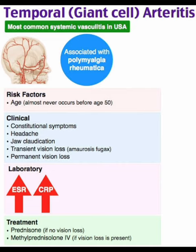Risk factors: age is a key factor — it almost never occurs before age 50 years, so older patients are affected. Clinical features include constitutional symptoms, headache, jaw claudication, and transient vision loss, known as amaurosis fugax.